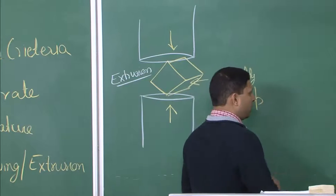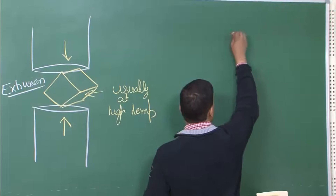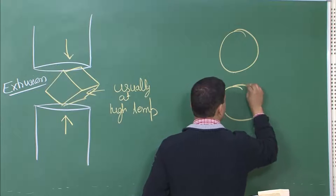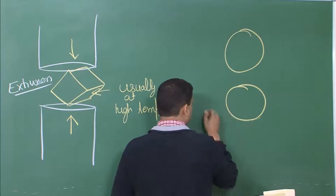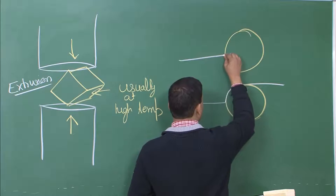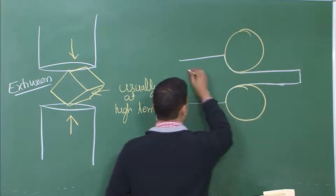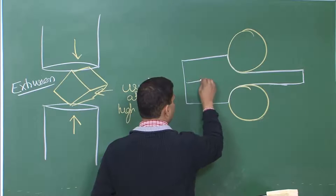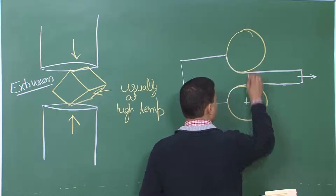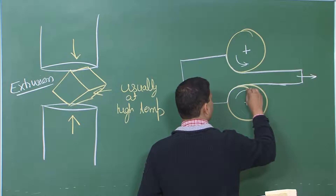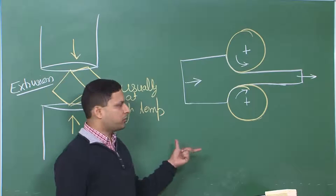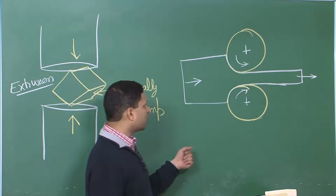Another example where you would need to understand the fundamentals of metalworking is the most common process — rolling. You have two rolls, you can even have more than two, and you have a slab going in and a thinner slab coming out as these drums rotate. Once you look at it, it appears to be a very simple process, but there are several intricacies.